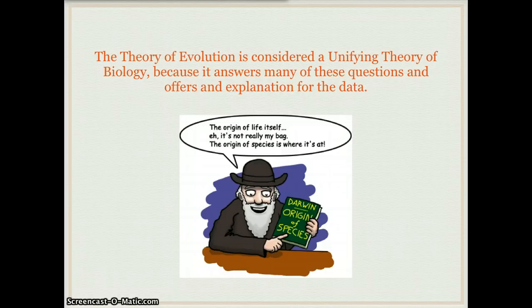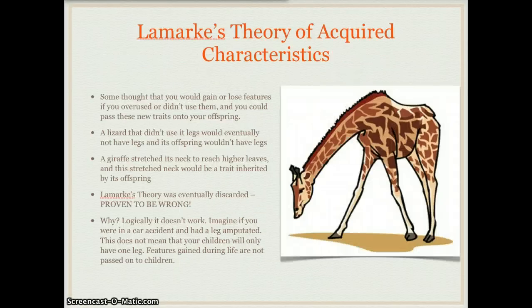Scientists have known for a long time that evolution has been happening, and there have been lots of different ideas about how evolution happens. One of those ideas was posed by a scientist named Lamarck. Lamarck had a theory of acquired characteristics — he thought a characteristic would be acquired during an individual's lifetime. He thought you would lose or gain features if you didn't use them or overused them, and you could pass these new traits on to your offspring. For example, a lizard that didn't use its legs would eventually not have legs, and its offspring wouldn't have legs, so they would become snakes.